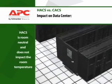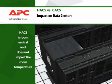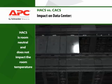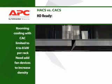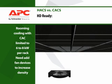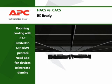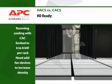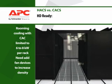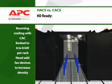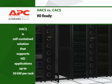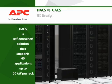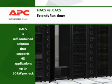The hot aisle containment system can easily be dropped in to any data center without impacting the data center environment. Typical raised floor systems only deliver enough cold air to support a maximum of 6 to 8 kilowatts per rack, and higher densities require specialized design or the addition of fan devices for proper air flow. APC's in-row cooling solution in the hot aisle containment system supports densities of 30 kilowatts per rack and beyond.